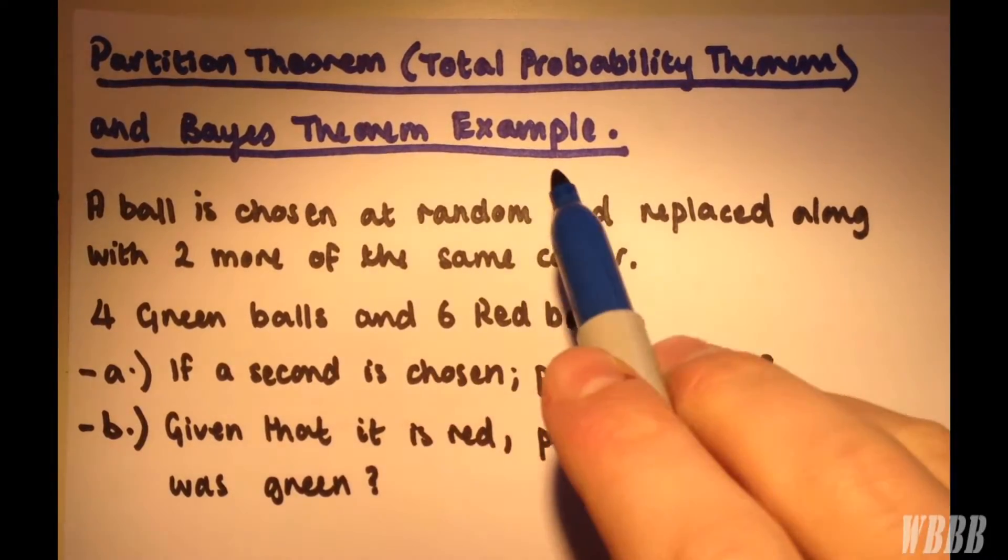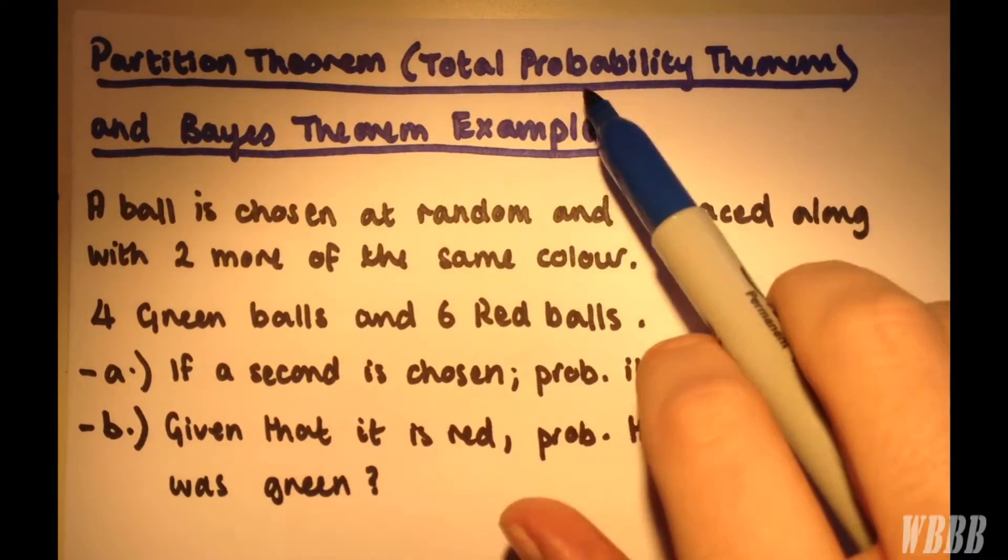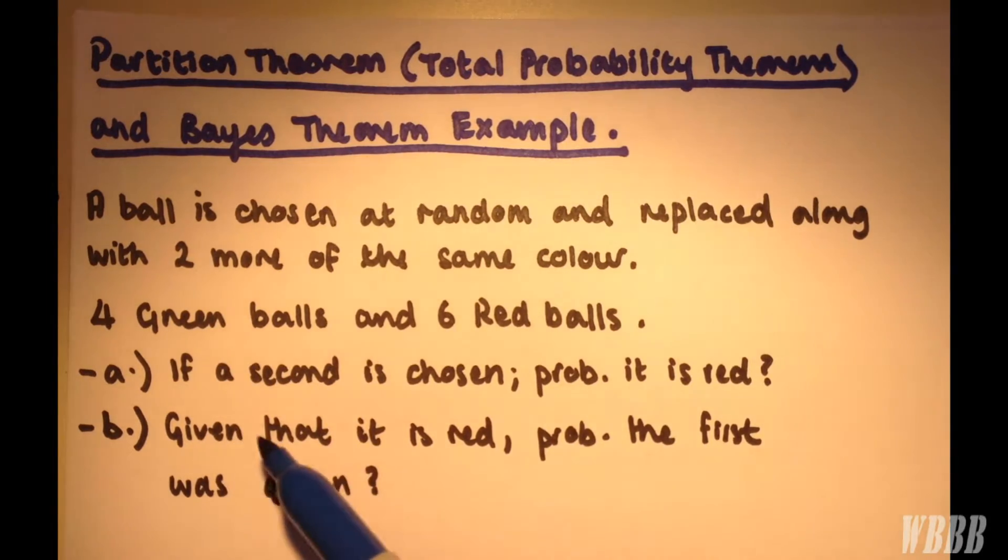What we're going to do here is look at an example where we use the partition theorem, also known as the total probability theorem, and also we're going to use Bayes' theorem. So it's going to be a two-part process. The question is as follows.